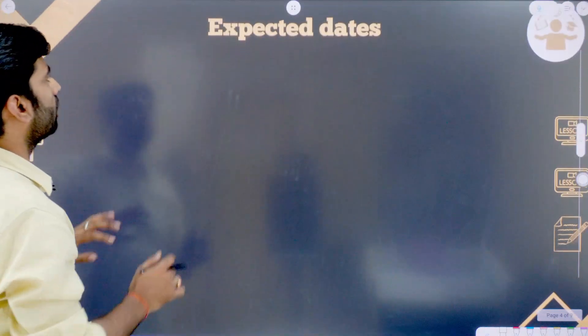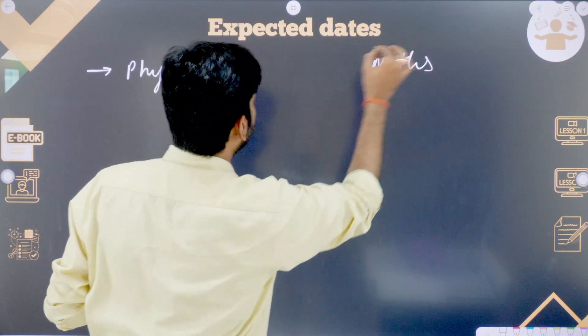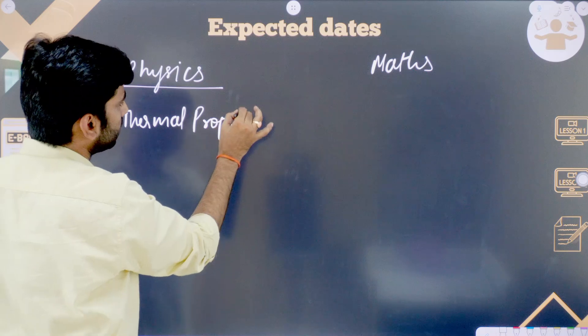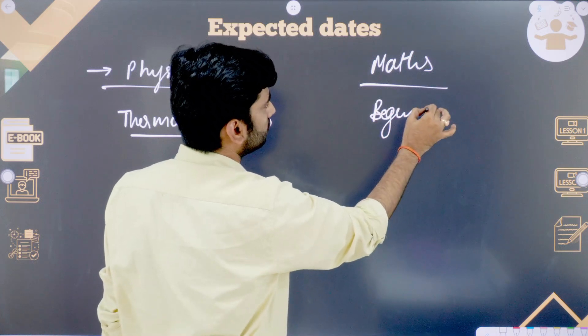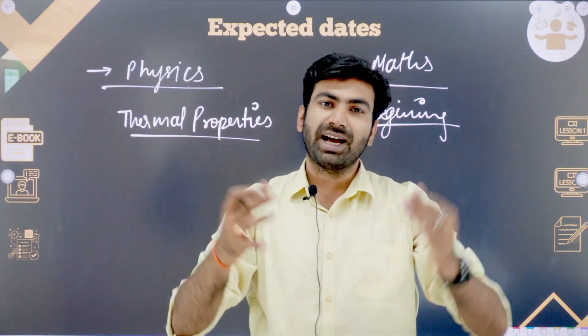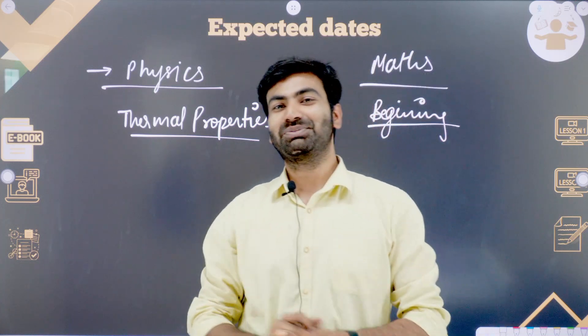If you are joining today, in the Hindi medium or bilingual batch we have already completed several chapters, so we will be continuing from where we left off. In mathematics we will be starting from the beginning. There are two subjects: physics and mathematics. In physics we will be starting from thermal properties, and in mathematics from the beginning. There will be a test series, ebook, and assignments — everything as in the previous batches — only the language has been updated to fully English.